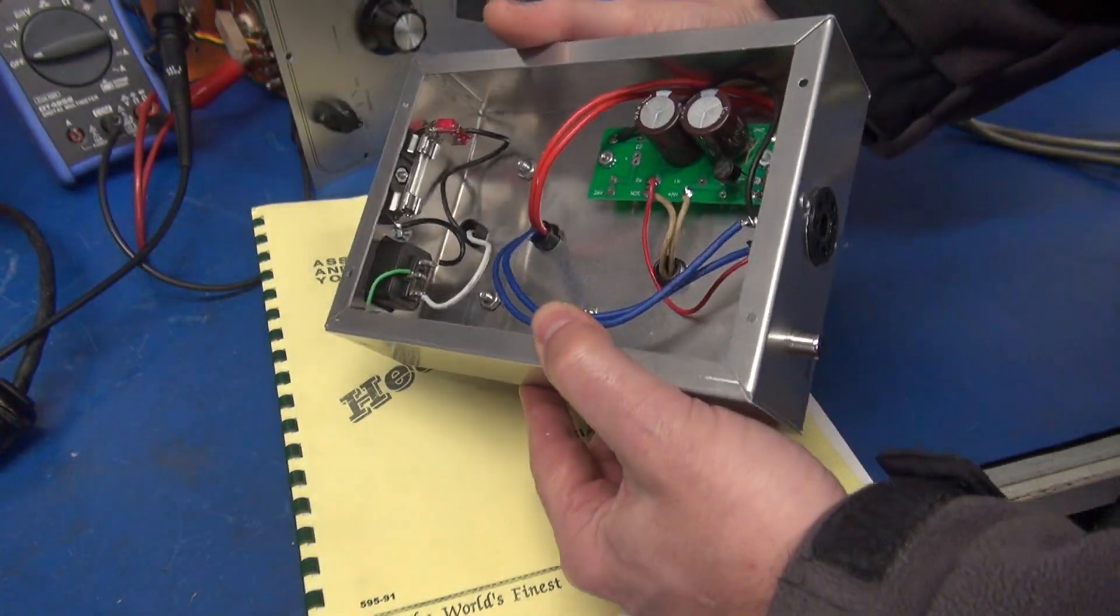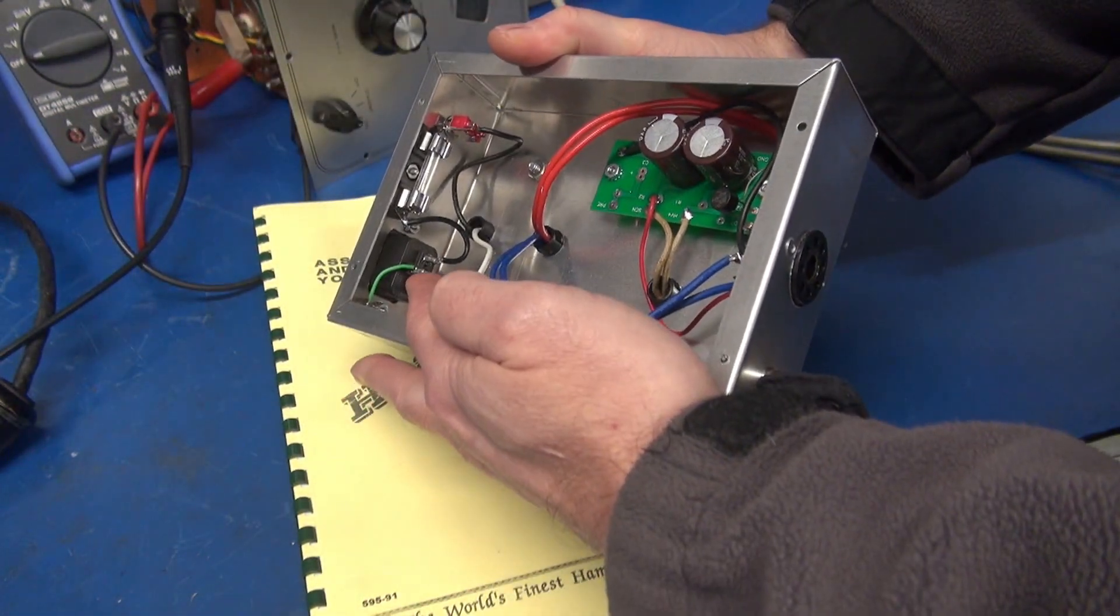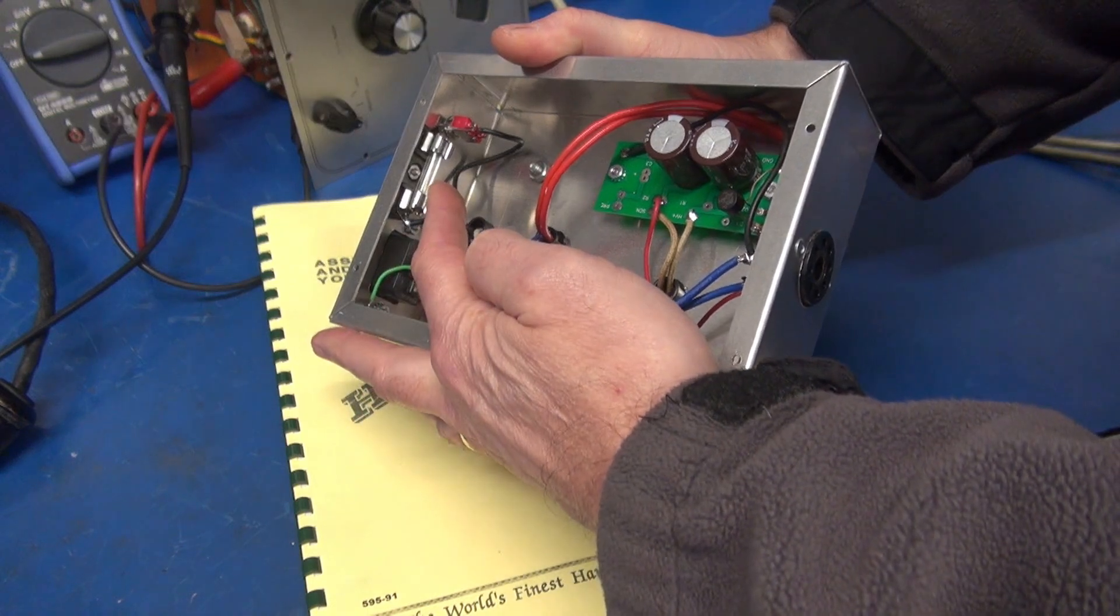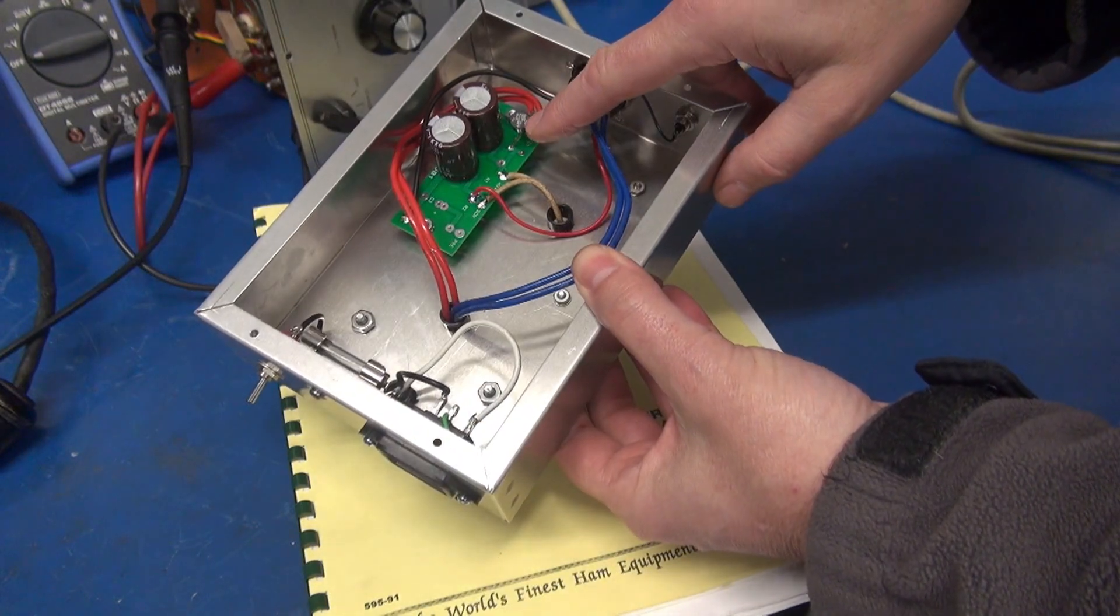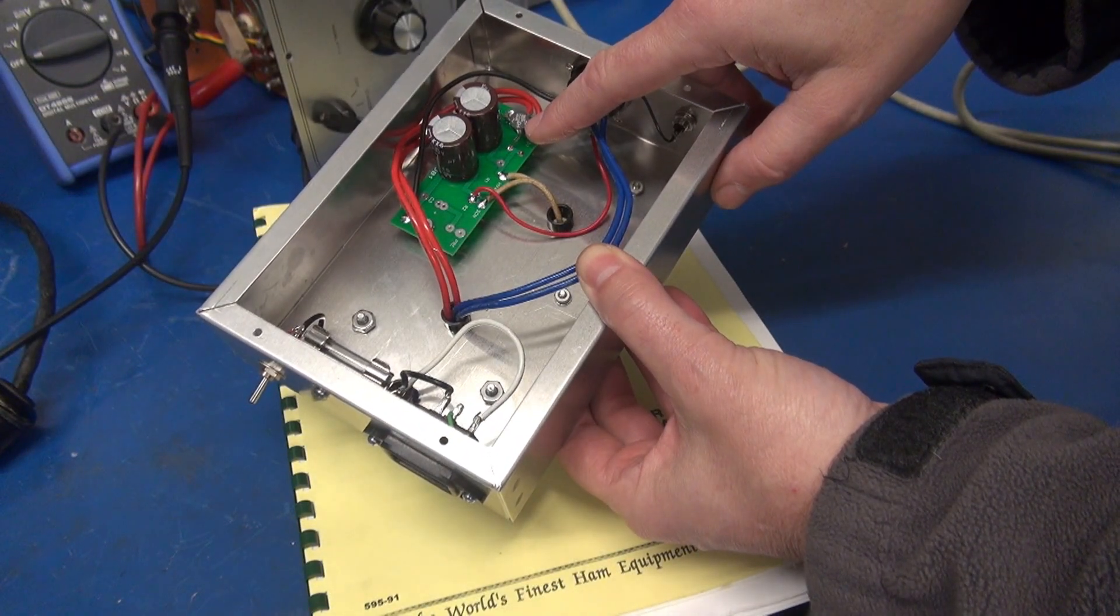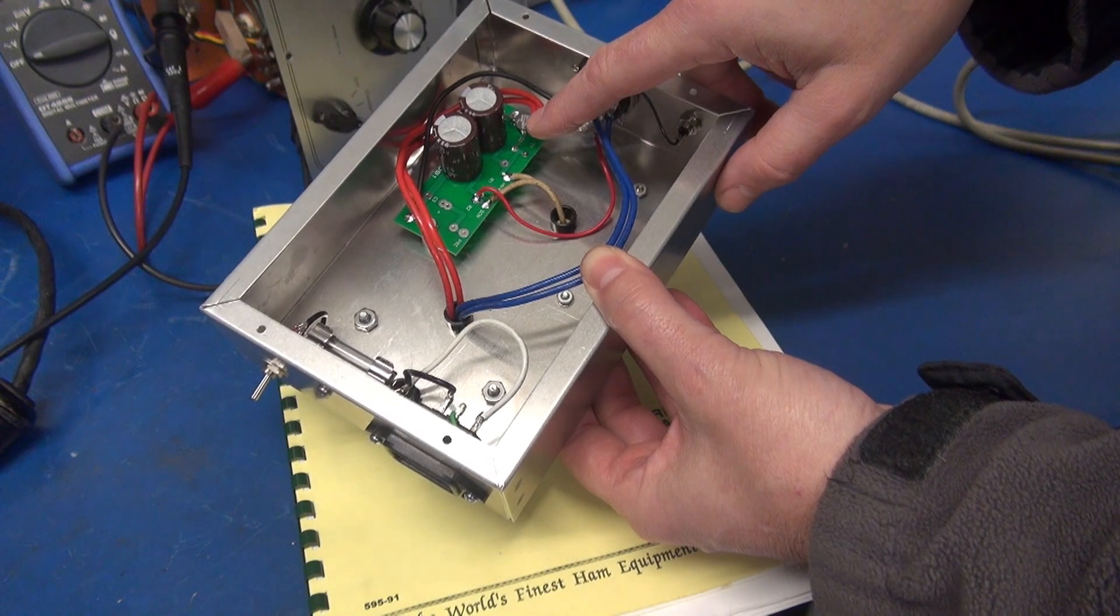Looking at the underside, you can see my IEC power connector feeding the fuse to the power switch. Then we rectify it with a full wave rectifier. This is a WL06, about a $2 component.